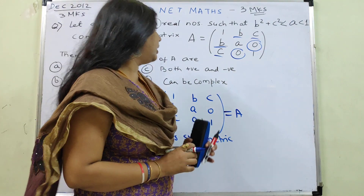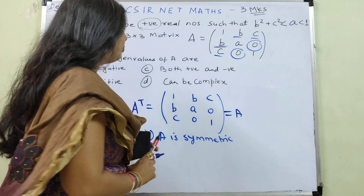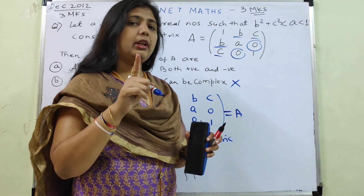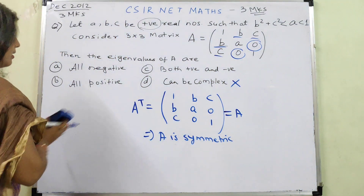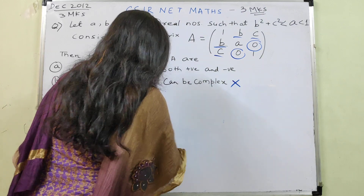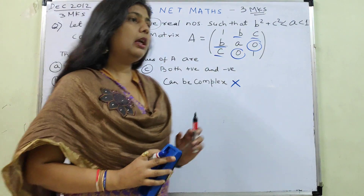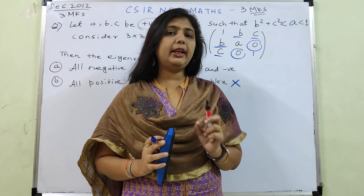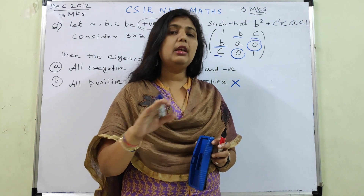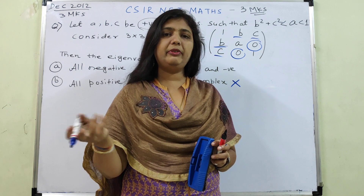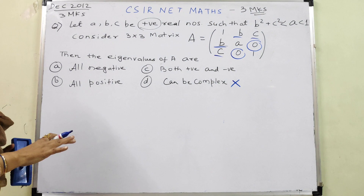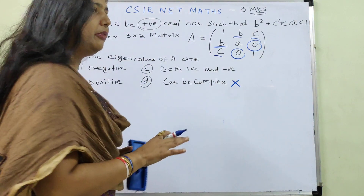For any symmetric matrix, eigenvalues cannot be complex, so that option is already wrong. The problem is worth 3 marks, so only one option is correct. Now, whenever we have a symmetric matrix and we talk about the signs of eigenvalues — positive or negative — the problem is definitely based on positive definite, non-negative definite, or related types of matrices. So we just have to identify whether it is positive definite, negative definite, or something else.